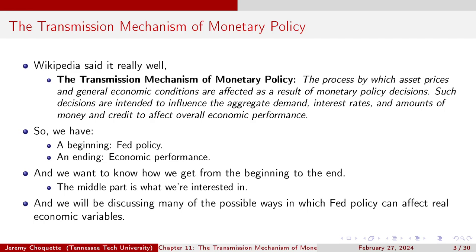We have a beginning and an end. The beginning is Fed policy; the end is some change in real economic performance. We want to know how we get from point A to point B — it's that middle part we're interested in. Like in the movie Seven: you know Gwyneth Paltrow's head ends up in the box because Kevin Spacey cut it off, and Brad Pitt's character is driven to murder out of wrath. But it's how Brad Pitt's character develops over the film that brings him to that point. It's that middle part — the way monetary policy transmits to real economic activity.